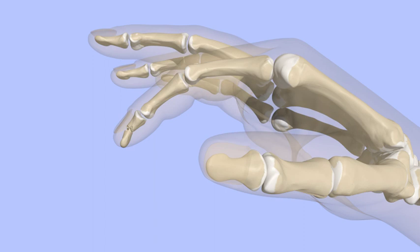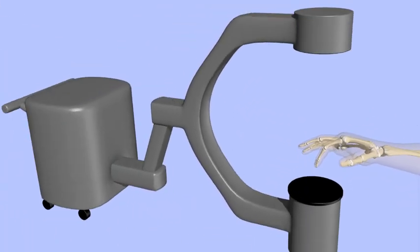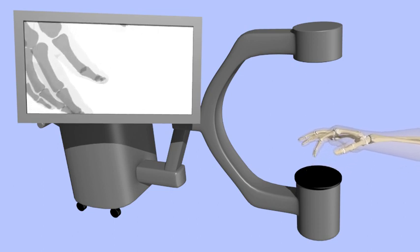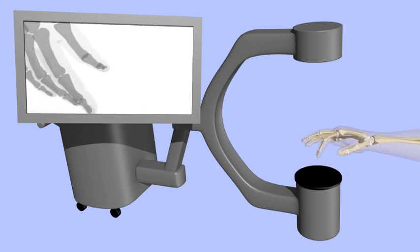The broken finger is cleansed and prepped to prevent infection. The fracture is reduced with the help of a fluoroscope. A fluoroscope is essentially a live x-ray machine. Images can be seen in real time to aid with the reduction of the fracture.